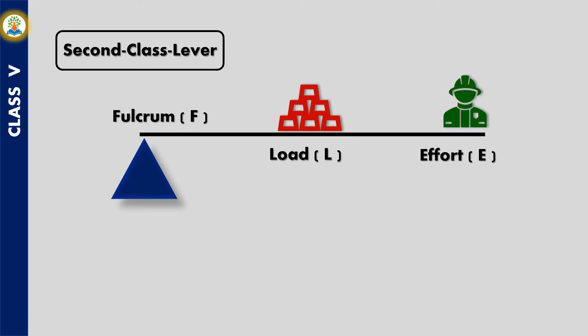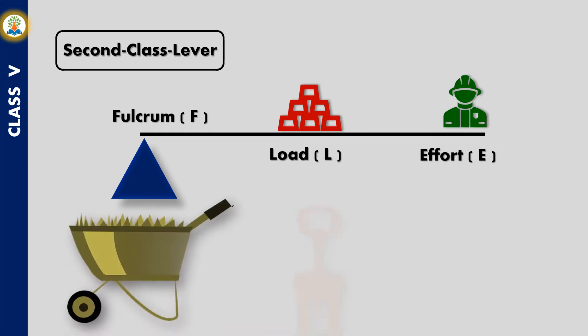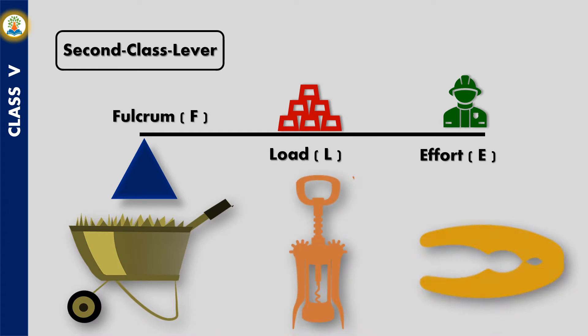In a second class lever, the fulcrum is at one end of the rod and the effort is applied at the other end. The load lies between the fulcrum and the effort. Wheelbarrows, bottle openers, and nutcrackers are examples of second class levers.